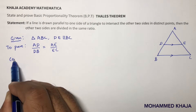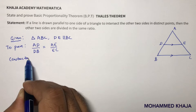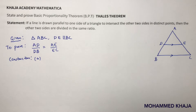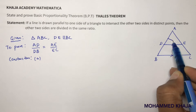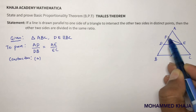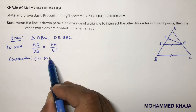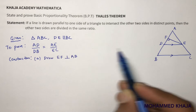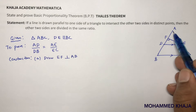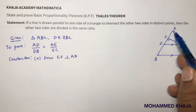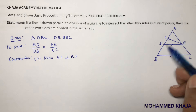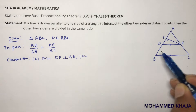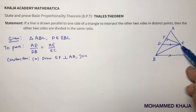To prove this, the construction required is: first, draw EF perpendicular to AB. Since EF is perpendicular to AB, it is also perpendicular to AD and BD as they are parts of the same line. Then join BE.